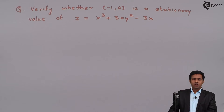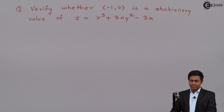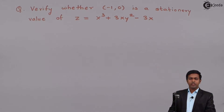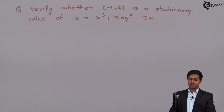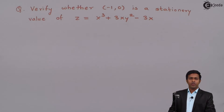Hello everyone. In this problem we have to verify whether (-1, 0) is a stationary value of the function z = x³ + 3xy² - 3x or not. To verify whether (-1, 0) is a stationary value or not, we have to check certain conditions.